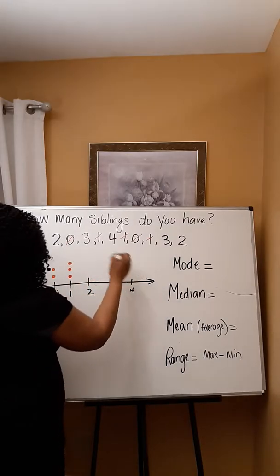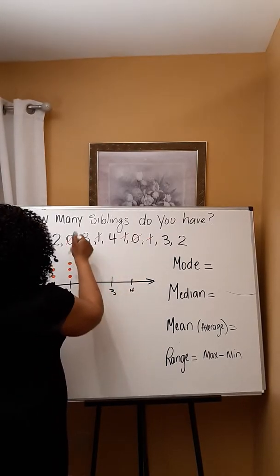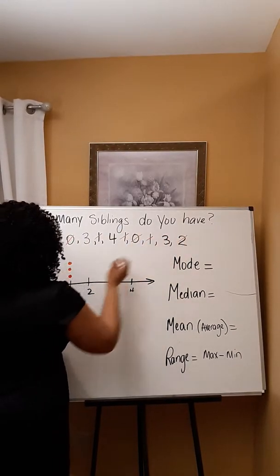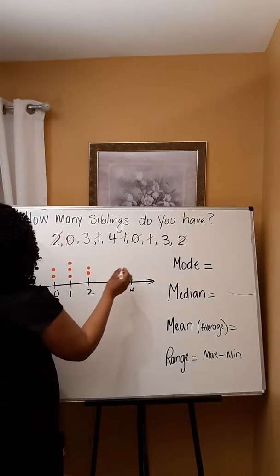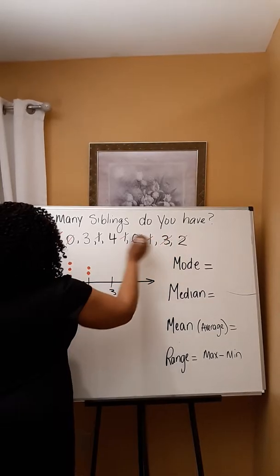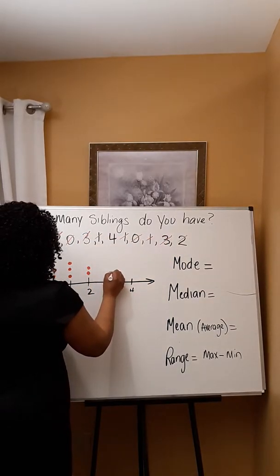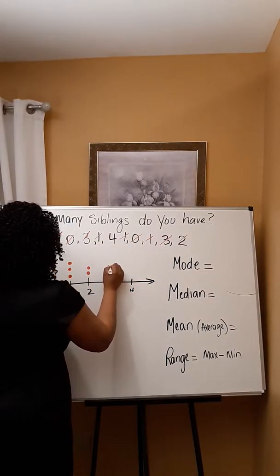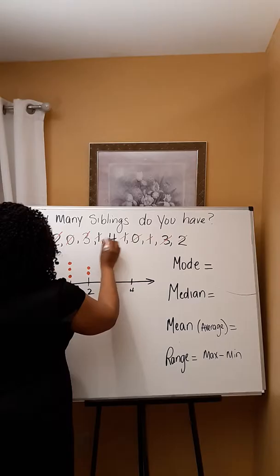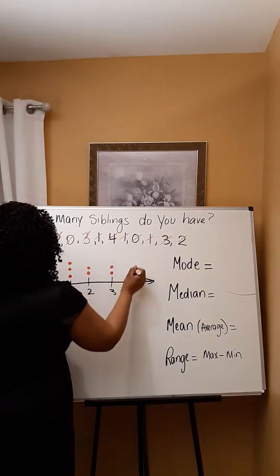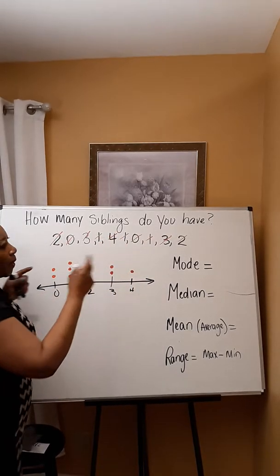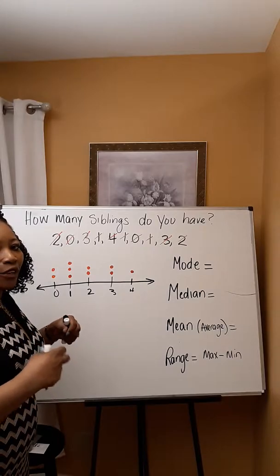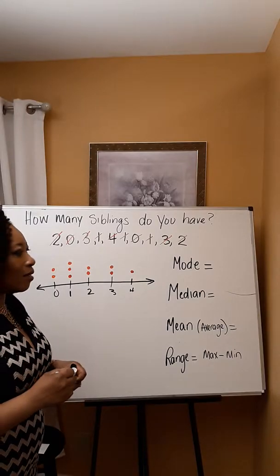Let's take a look at two — there are two twos, so I'm going to put two dots above. There are two threes, and one four. So by crossing down each time and putting a dot, I know that I'm going to include all my data.